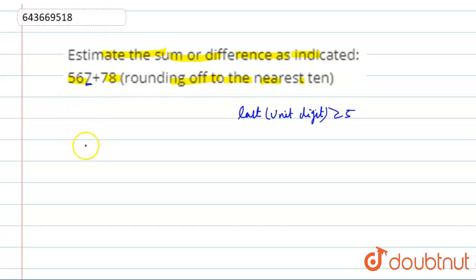So 567, nearest to tens place. Now 7 is greater than 5, so we will add 1 to the tens place. So this will be equal to 570.